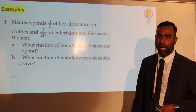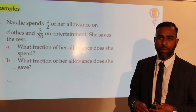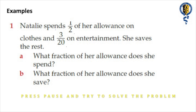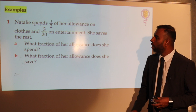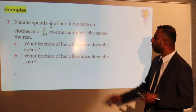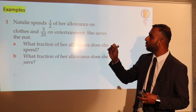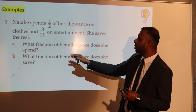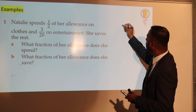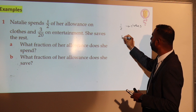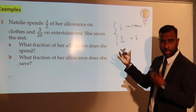Let's have a look at a worked example in class. I'll put the example up, give you a couple of minutes to think about it, and then we'll work through it together. Natalie spends half of her allowance on clothes and 3 twentieths on entertainment, and she saves the rest. There are three pieces of information: she spends half on clothes, 3 twentieths on entertainment, and saves the rest. The question is: what fraction of her allowance does she spend?